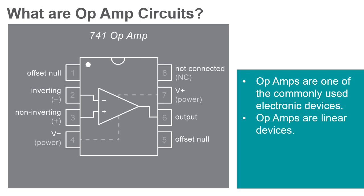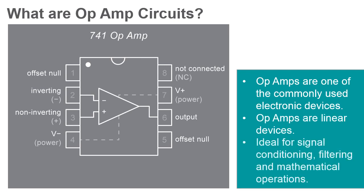Op amps are linear devices that can provide close to ideal DC amplification, making them an excellent choice for signal conditioning, filtering, and even mathematical operations.